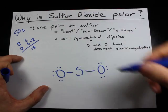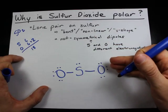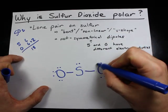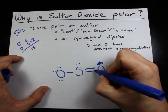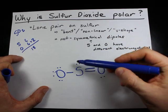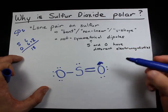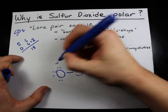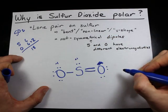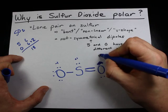Then I dump all extra electrons on the central atom. Then I move pairs from the outer atoms into double bonds, or pi bonds, in order to alleviate any formal charges found in the molecule. The formal charge on this oxygen here is minus 1, the formal charge on this sulfur is plus 1, and the formal charge on this oxygen here is 0.